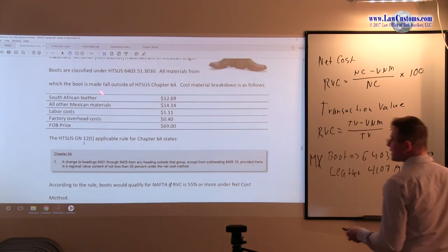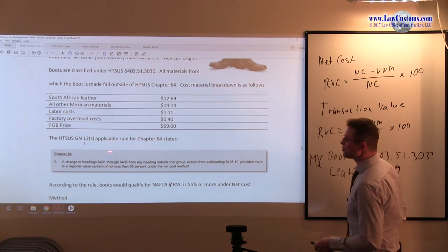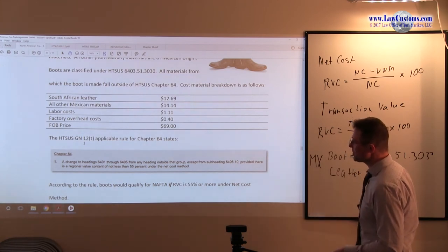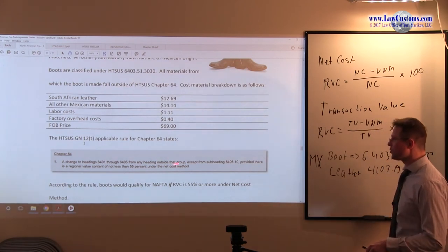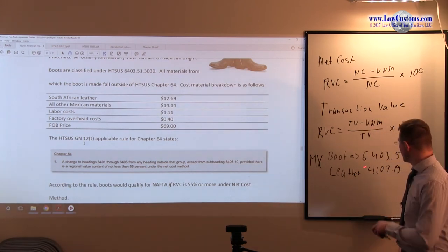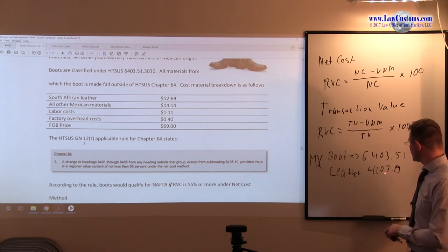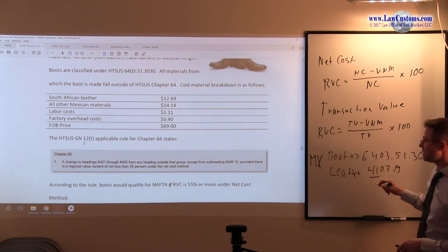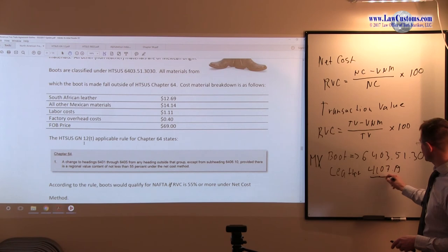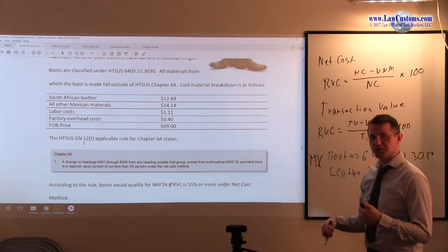If we take a look at the General Note 12 for the Chapter 64, it says that there must be a change to heading 6401-6405 from any other heading of the good, right? Except for that one. The heading 4107 is outside of this group. So we are good on the tariff shift. That's the first step.